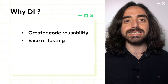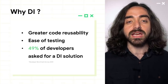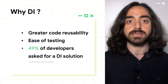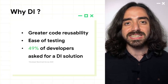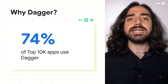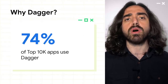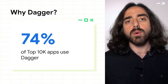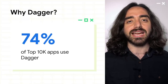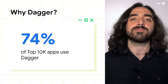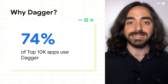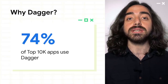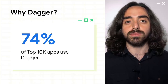In the latest Android developer benchmark survey, 49% of developers asked us to work on a dependency injection solution, so we teamed up with the Dagger team to create Hilt. Dagger is a dependency injection library developed by Google and is widely adopted in the top Android apps. However, getting started with Dagger on Android has a steep learning curve. Hence, we have created Hilt — an opinionated dependency injection library specifically built for Android on top of Dagger.